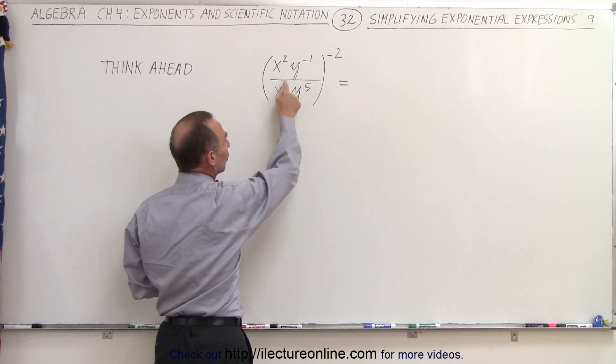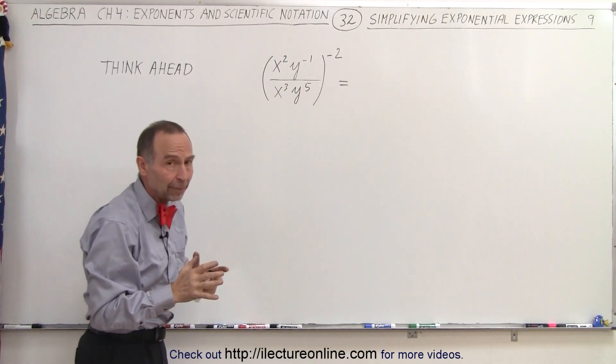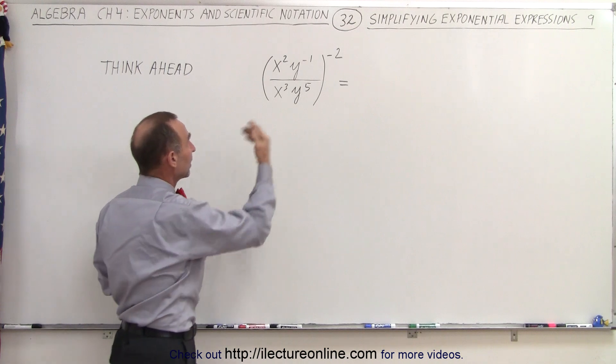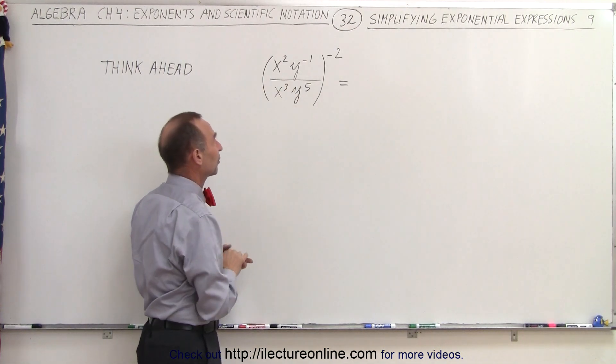And then when we add exponents, you notice that the positive exponent in the denominator for x will be bigger than the negative exponent, so we end up with x to some positive exponent.